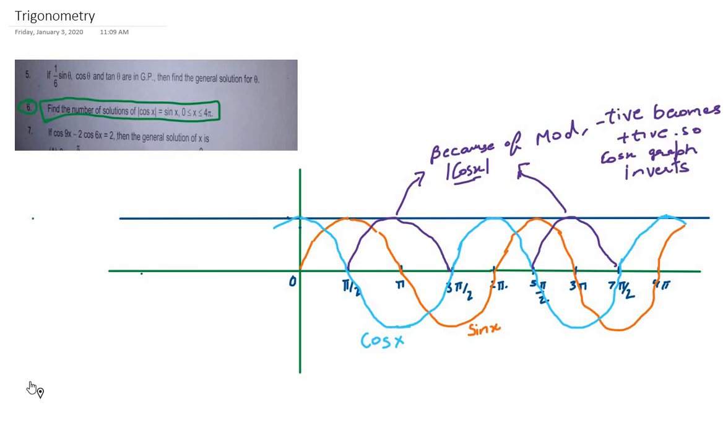It's decreasing up to π, then increasing again up to 2π, then decreasing up to 3π, and increasing again up to 4π. Similarly, for sin x, you can see the function is drawn in orange color.